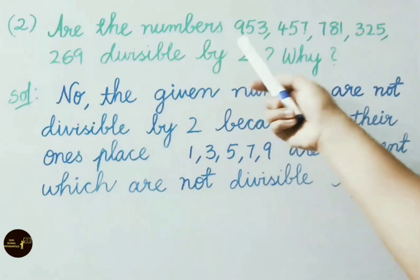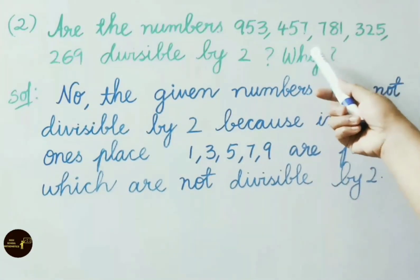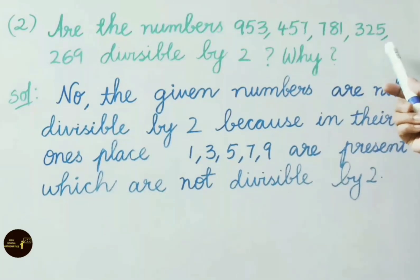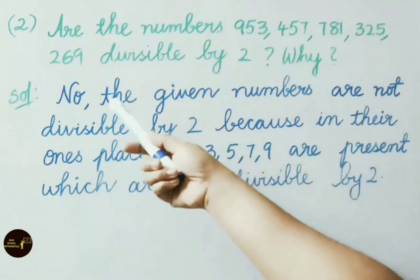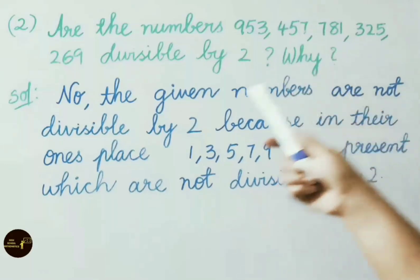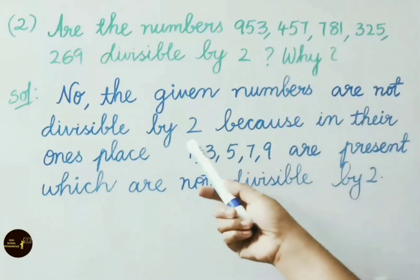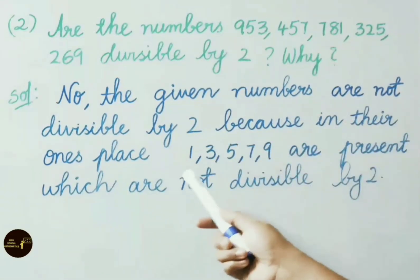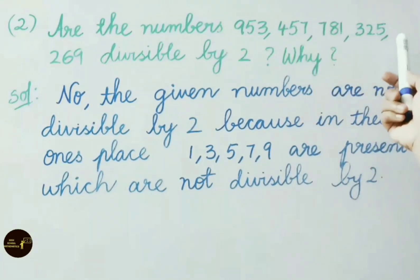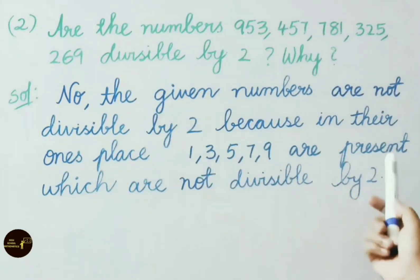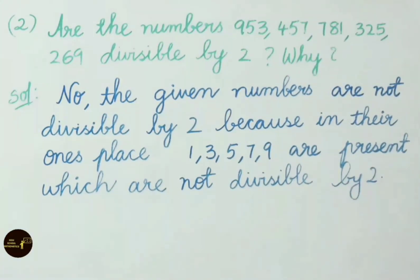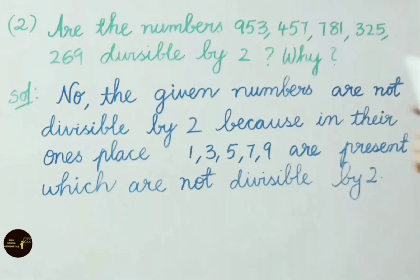Second question: Are the numbers 953, 457, 781, 325, 269 divisible by 2? Why? No, the given numbers are not divisible by 2 because in their ones place 1, 3, 5, 7 and 9 are present, which are not divisible by 2. As we know, a number to be divisible by 2, in its ones place there should be either 0, 2, 4, 6 or 8. Here those numbers are not present, so the given numbers are not divisible by 2.